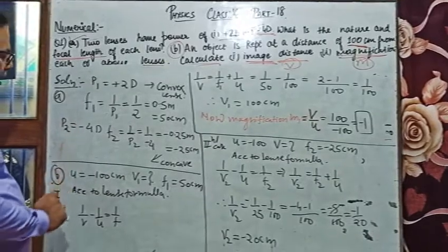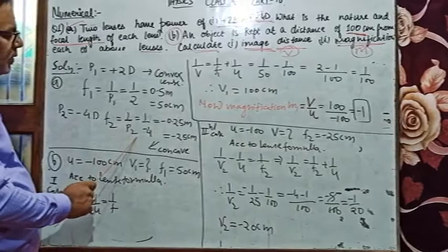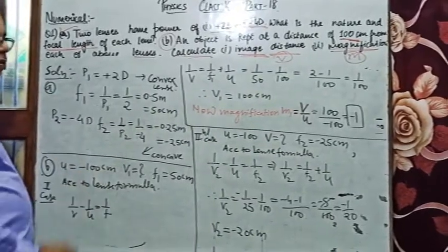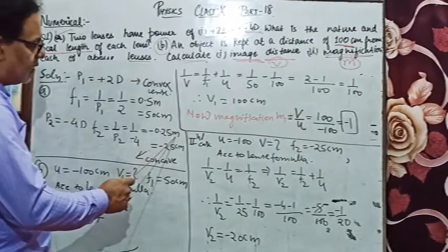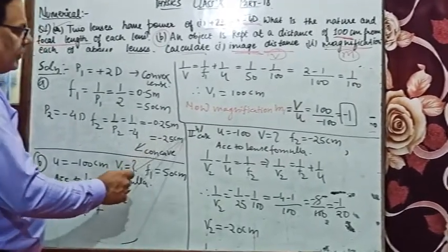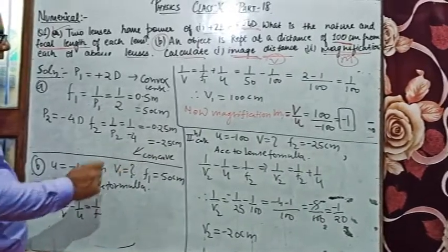If we look at the power of the other lens, then for P2, 1/P2 = 1/(-4) = -0.25 meter. So this will be -25 centimeter, which is our focal length.